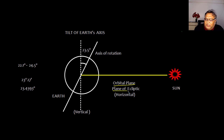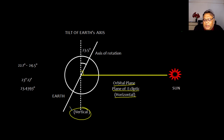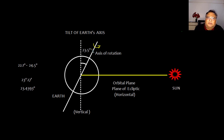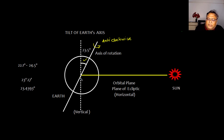The orbital plane or plane of ecliptic is considered as a horizontal direction. If you have defined horizontal, then 90 degrees to that — the perpendicular direction — is going to be vertical. Suppose this is the earth's axis and earth rotates from west to east; if observed from the top, it will be anti-clockwise. This angle made from the vertical is the tilt of the earth's axis, and it is approximately 23.5 degrees.